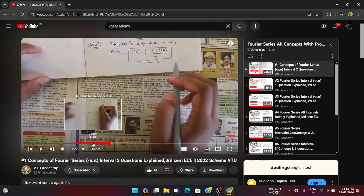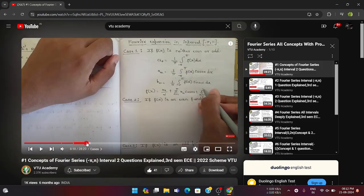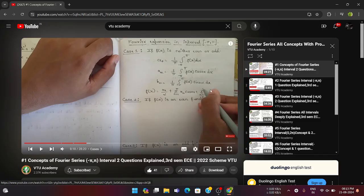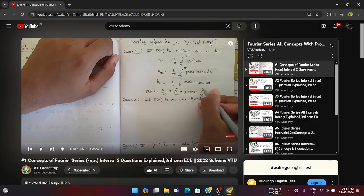For the interval minus π to π, odd functions and even functions — all of them we need to find out. Related to this interval, they would be asking one problem. For a detailed explanation of Fourier expansion in the interval minus π to π, you can visit our Fourier series lecture playlist. One question is fixed from the interval minus π to π, and another question is from the interval zero to 2π.